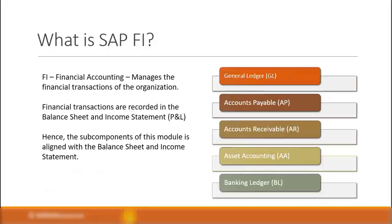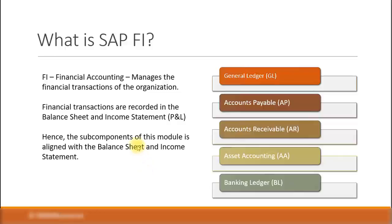Let's look at the SAP FI module. FI stands for financial accounting, which manages the financial transactions of the organization. The financial transactions are recorded in your balance sheet and income statement, also known as the P&L account statement. The financial accounting module has many sub-component modules. The most common ones are general ledger, accounts payable, accounts receivable, asset accounting, and banking ledger. The SAP FI module is also the most commonly implemented module in the SAP ERP environment, because without it you will not be able to generate the balance sheet and income statement for your organization.